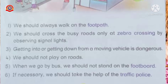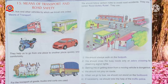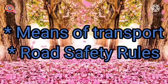The road safety rules are: one, we should always walk on the footpath; two, we should cross busy roads only at zebra crossings by observing signal lights; three, getting into or getting down from a moving vehicle is dangerous; four, we should not play on roads; five, when we go by bus we should not stand on the footboard; six, if necessary we should take the help of the traffic police. We finished our chapter on means of transport and road safety.